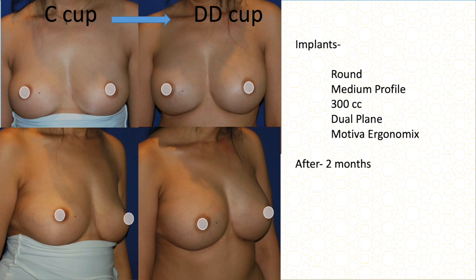This C cup patient had good volume and good projection but wanted more cleavage and more fullness on the top part of the breast. I did a 300 cc medium-profile dual-plane Motiva implant. From C cup to double D cup — this was two months after surgery.